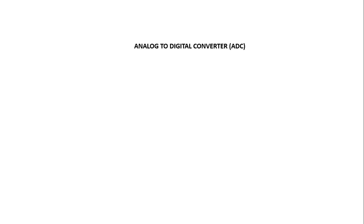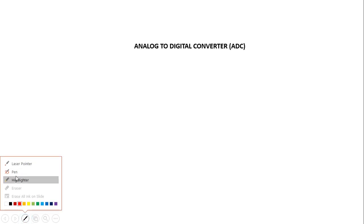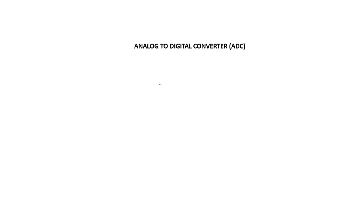Hello guys, today I am going to explain how the ADC for our project is going to work. ADC means analog to digital converter. First of all, we are going to remember that our signal is going to be from 1 to 5 volts, and that is the signal we are going to introduce into Arduino.